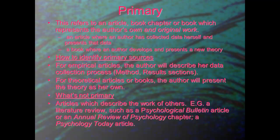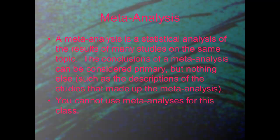What's not primary? Articles that describe the work of others. Literature reviews are not primary — reviews you find in Psychological Bulletin, Annual Review of Psychology, and Psychology Today articles are not primary because a reporter is interviewing the person who actually collected the data. A meta-analysis is a specific type of article where the author performs a statistical analysis of the results of many studies on the same topic. Since this is complicated and most students haven't had statistics yet, meta-analyses are off limits — don't cite one in your papers.